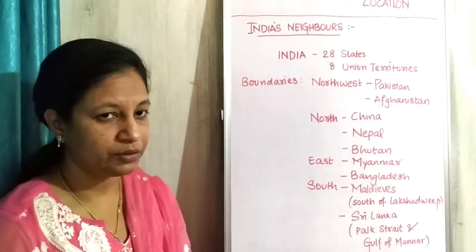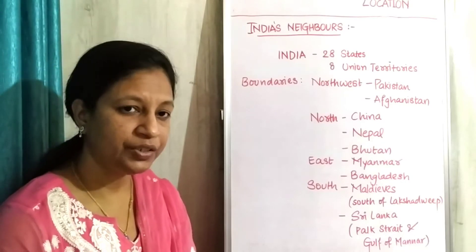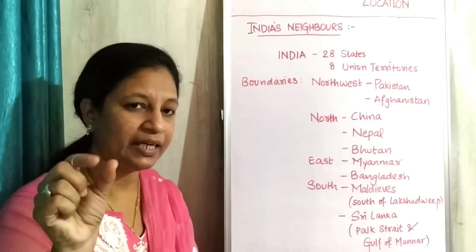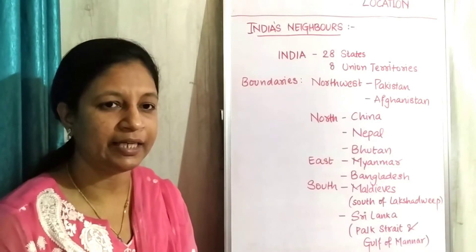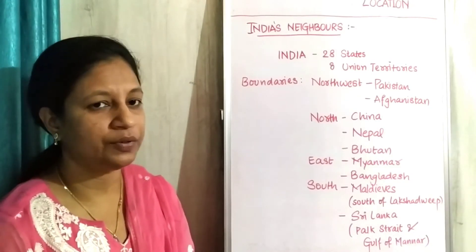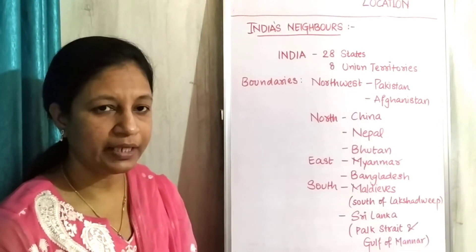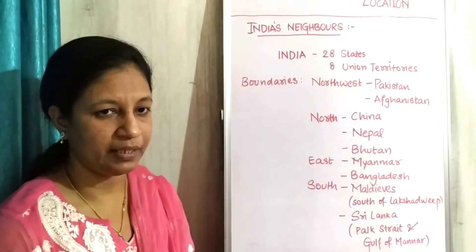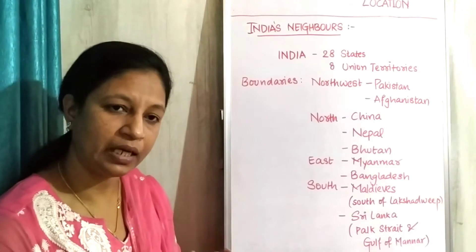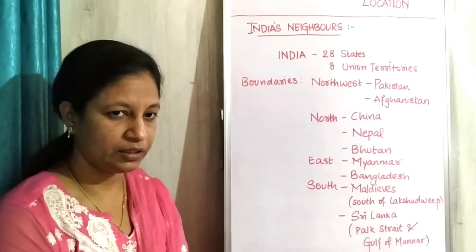Sri Lanka is divided from the mainland by small gulfs and passes. These are known as the Palk Strait, and the Gulf of Mannar separates Sri Lanka from India's mainland. To the south of Lakshadweep we have the Maldives — they are also island countries.